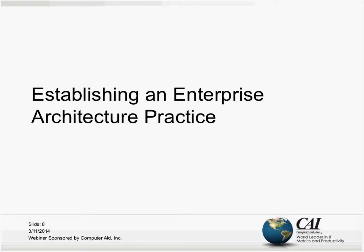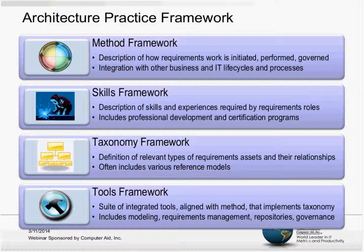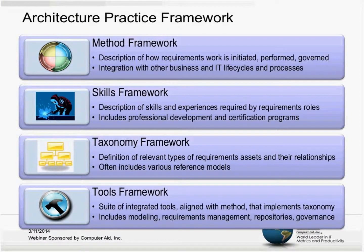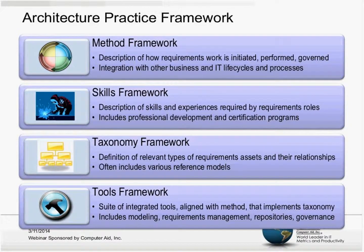We're here today to talk about establishing an enterprise architecture practice, on the backdrop of discussing what an architecture framework is. That's a very overloaded term in the enterprise architecture industry, so we've tried to specify its main constituent elements. We actually relabel this as an 'architecture practice framework' — the things you need to have in place to actually perform enterprise architecture work. There are four critical components: a method framework, a skills framework, a taxonomy framework, and a tools framework.